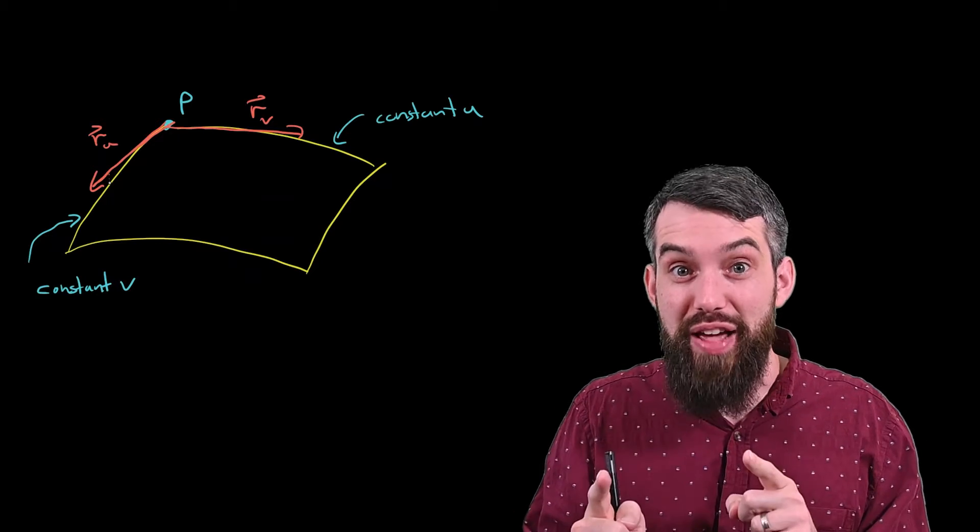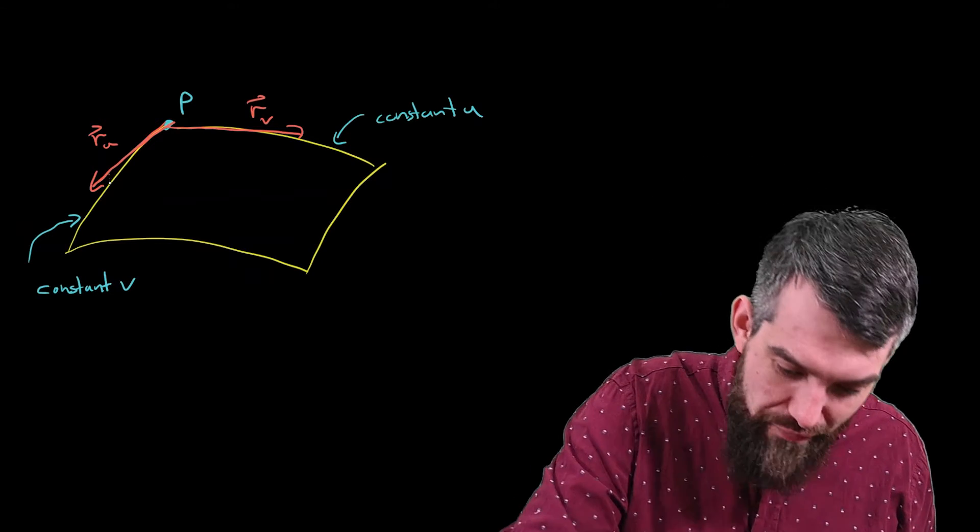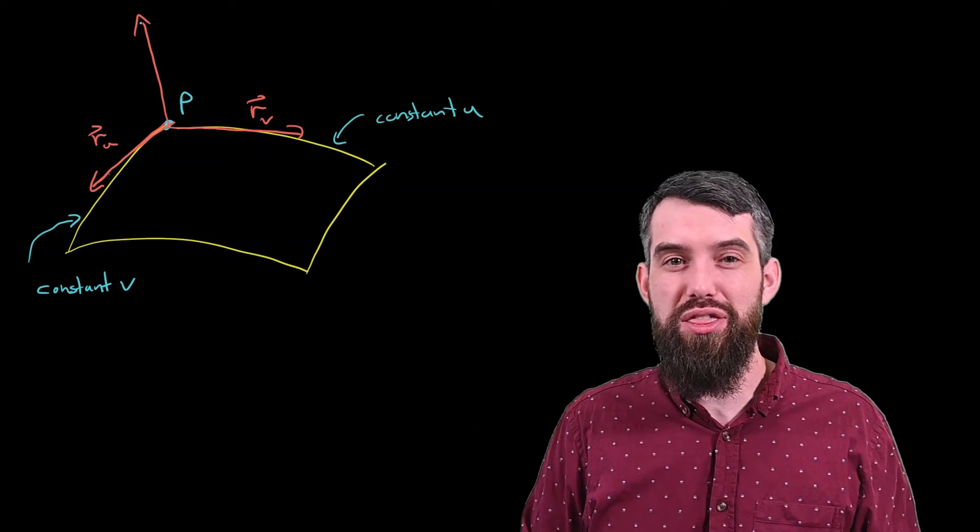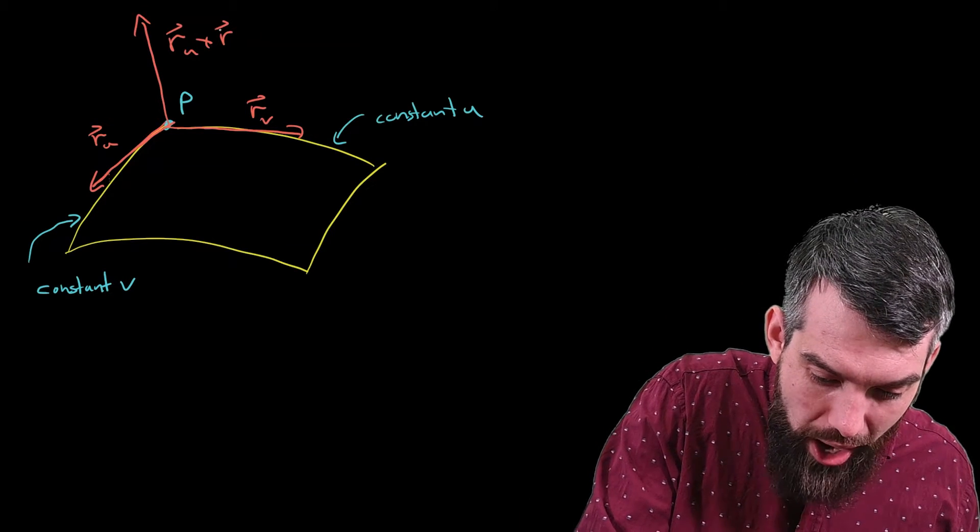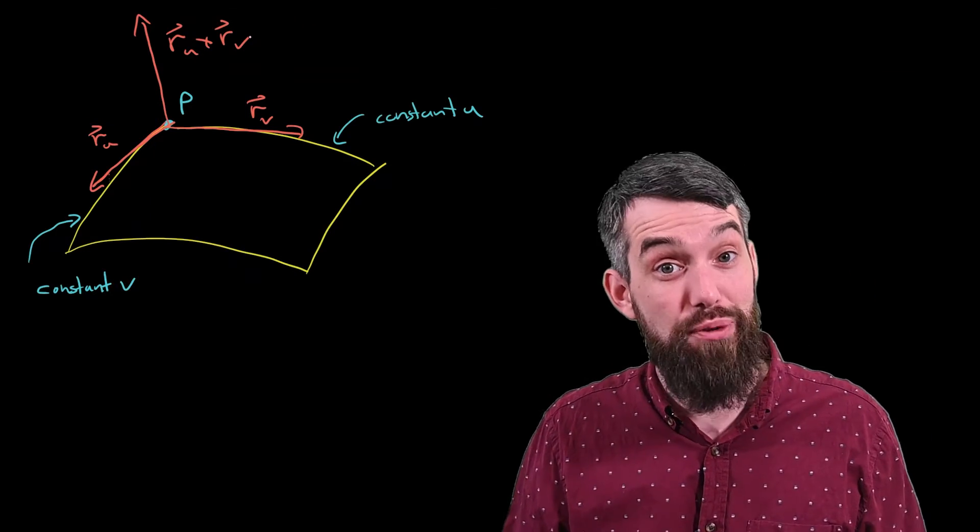Okay, now I'm going to draw a third vector. I've got RU and I've got RV, so it's quite natural to create a third vector, and this is the vector RU cross RV. It's the cross product of these two vectors.